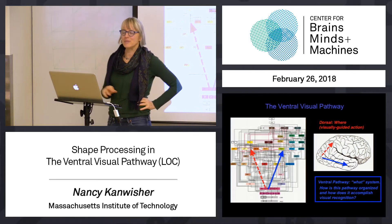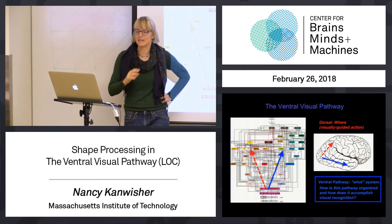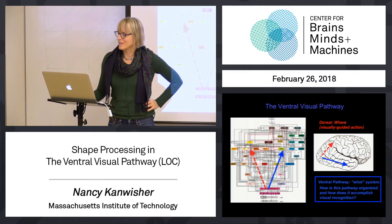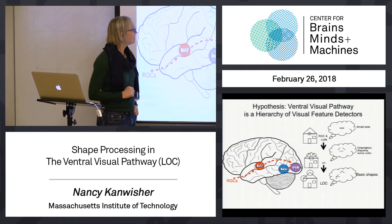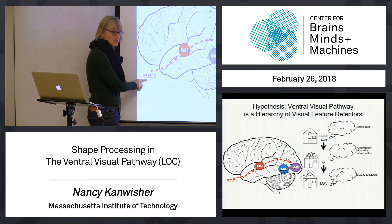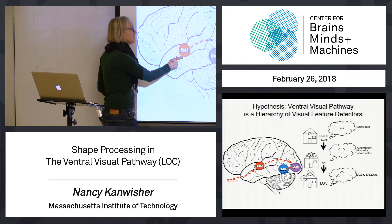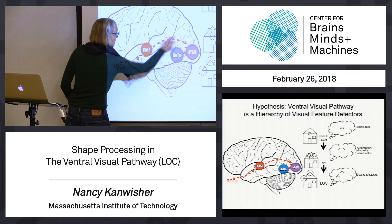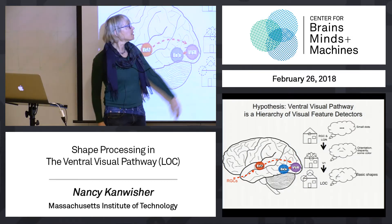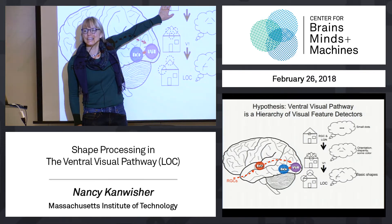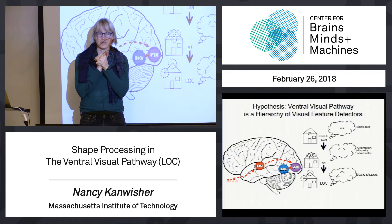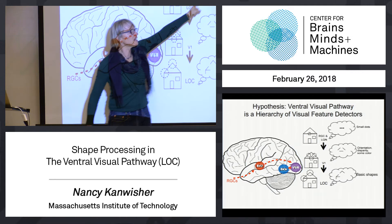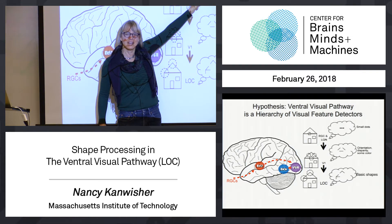The ventral pathway is involved in conscious perception and object recognition. To review the pathway: retinal ganglion cells send axons up to the LGN, make one synapse, and go up to primary visual cortex — all deep in the middle of the brain. The retinal ganglion cells and lateral geniculate cells have center-surround receptive field organizations, responding to small dots that either increase or decrease in light.